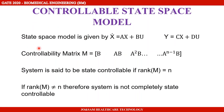The state space model of a system is given by the general equations: x-dot equals A into x plus B into u, and y equals C into x plus D into u.